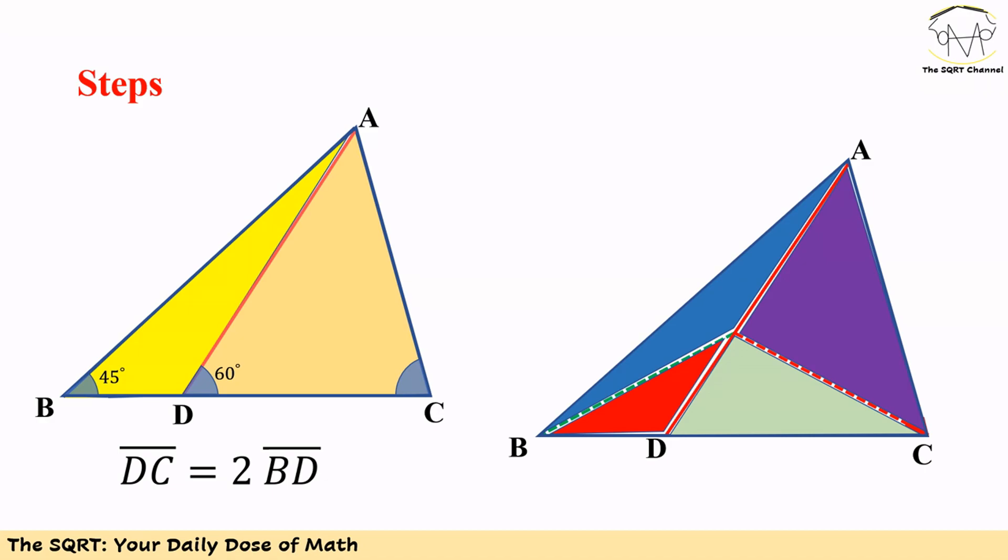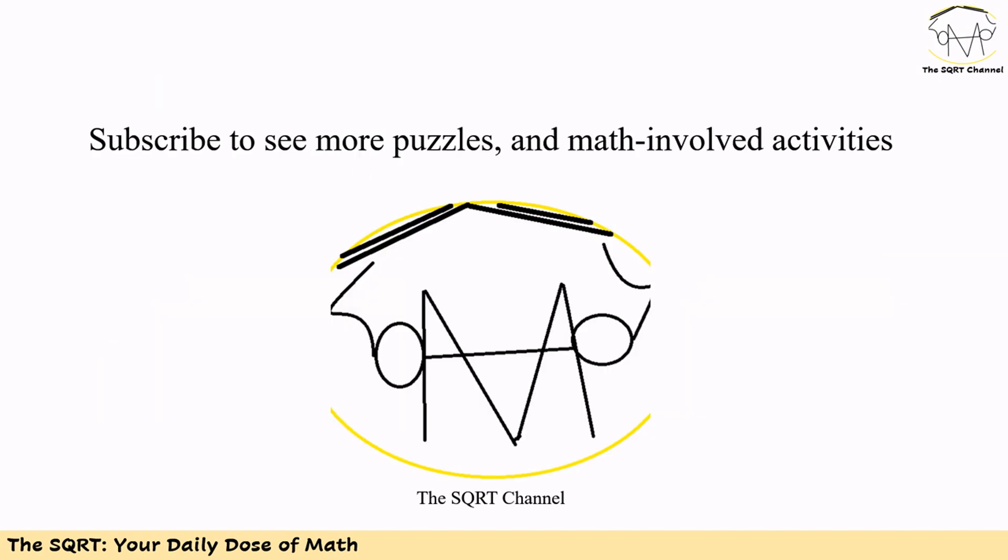We first started with the green triangle and found all the angles, then we moved to the red triangle. After that, we moved to the blue triangle, and at the end we found the angles for the purple triangle. Finally, using the angles from the purple and green triangles, we found the answer.